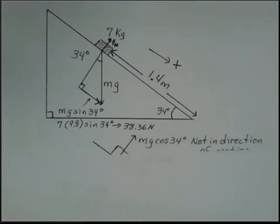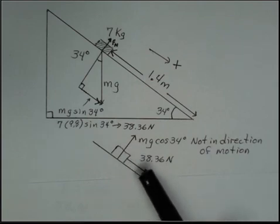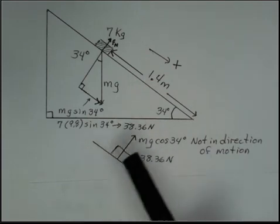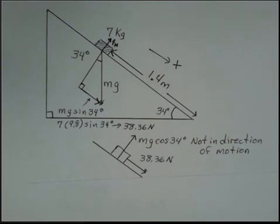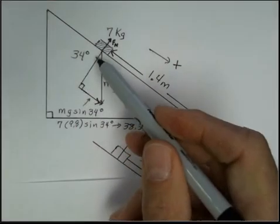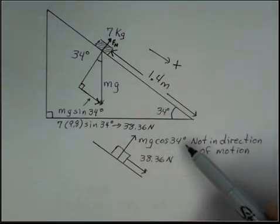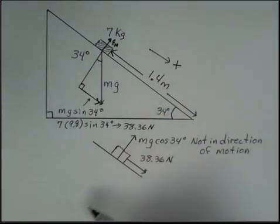If I kind of separate out the object now and just show the forces acting on it appropriate to the motion here, we have this component of gravity acting down the plane and we have the normal force. The normal force is not important in this calculation. It does have a value of mg cosine of 34 degrees, but because this problem has no friction, we will not need to use that value.